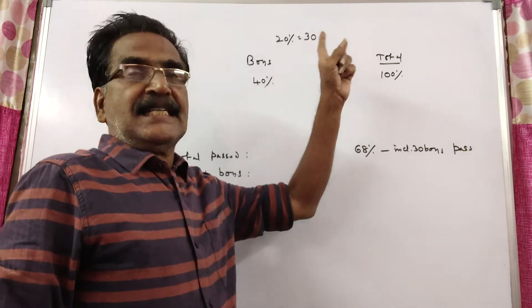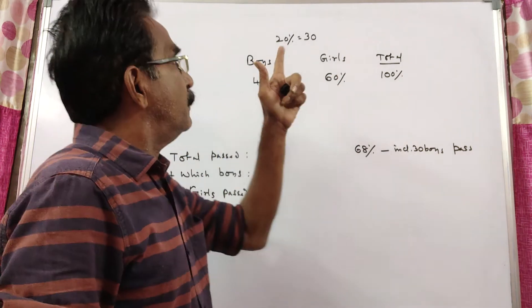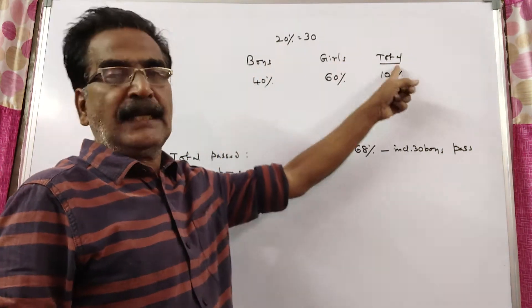In a class, girls are 60 percent. Girls 60 percent means boys 40 percent, total 100 percent.